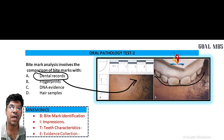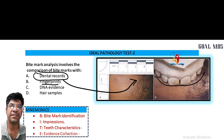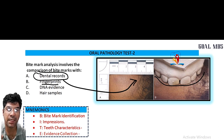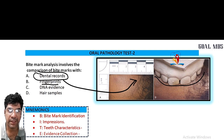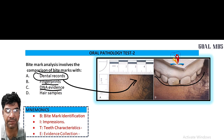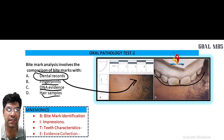The second option is fingerprints. Bite mark analysis is a distinct field from fingerprint analysis — fingerprint analysis involves study of unique patterns and ridges on skin surfaces, particularly on fingers and palms. It is used for identification purposes but is not directly related to bite mark analysis. The third option is DNA evidence — DNA analysis involves examination of genetic material from biological samples like blood, saliva, or hair to identify individuals.